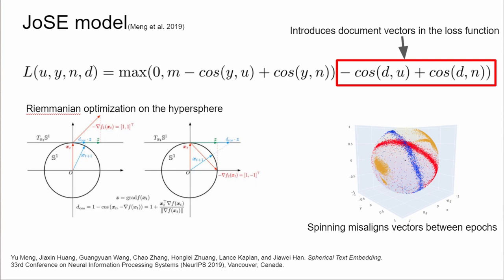The first: the embeddings are restricted to the hypersphere, which appears to result in a non-convergent spinning of the embedding space during training. The second: document embeddings are included via the loss function, which, along with the word embeddings that only appear in the original corpus, fall out of date during domain adaptation.